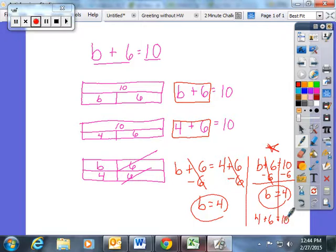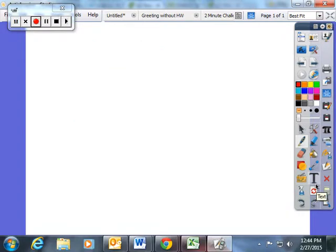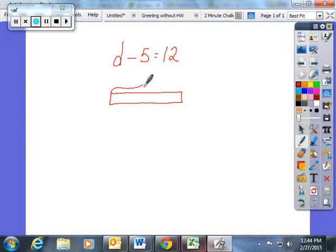Let me show you a subtraction equation. These are a little trickier. Here, D minus 5 is equal to 12. This is a little different. You're not adding two things together. You are starting with a value of D. You want to take from that D, 5.